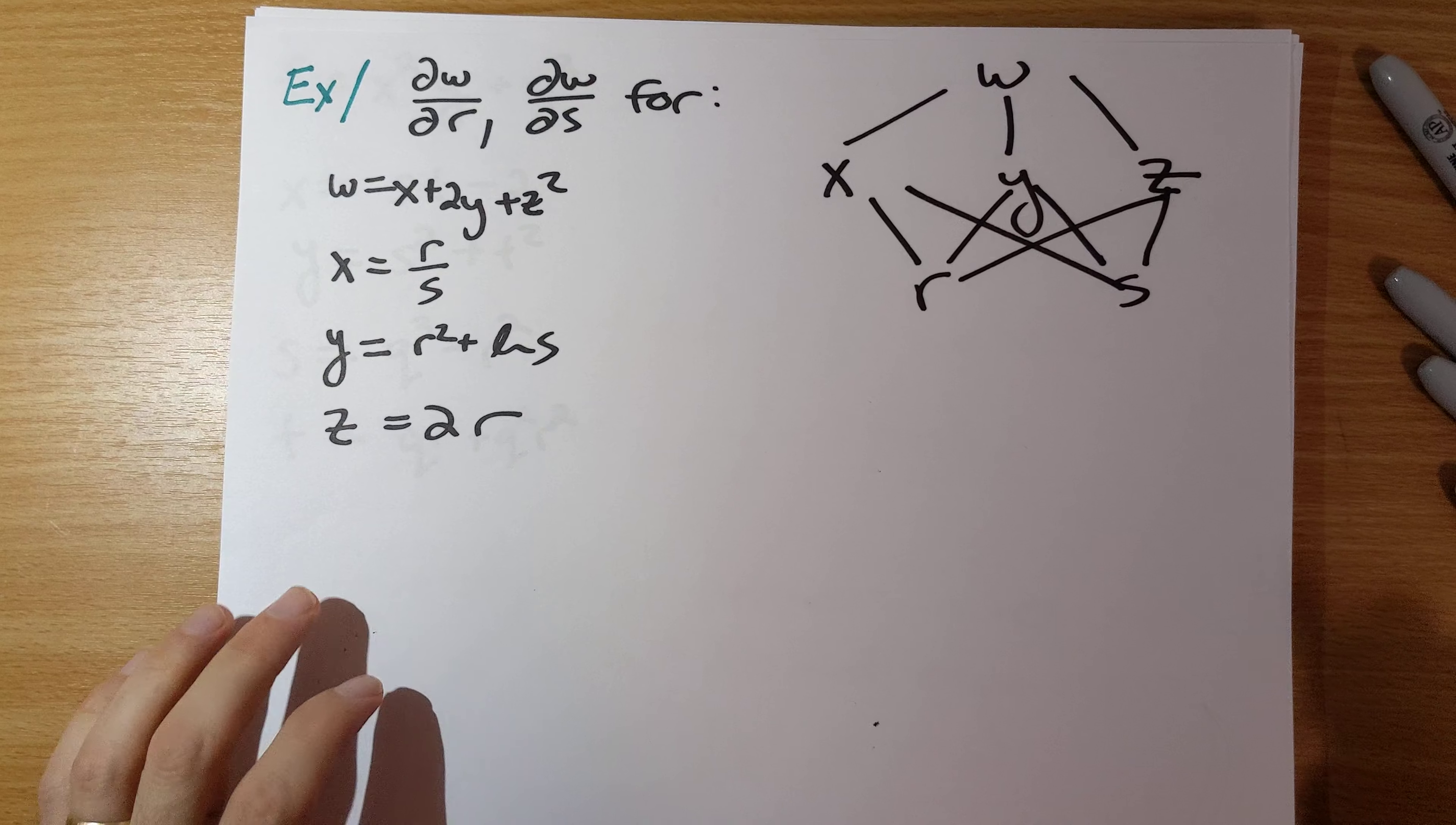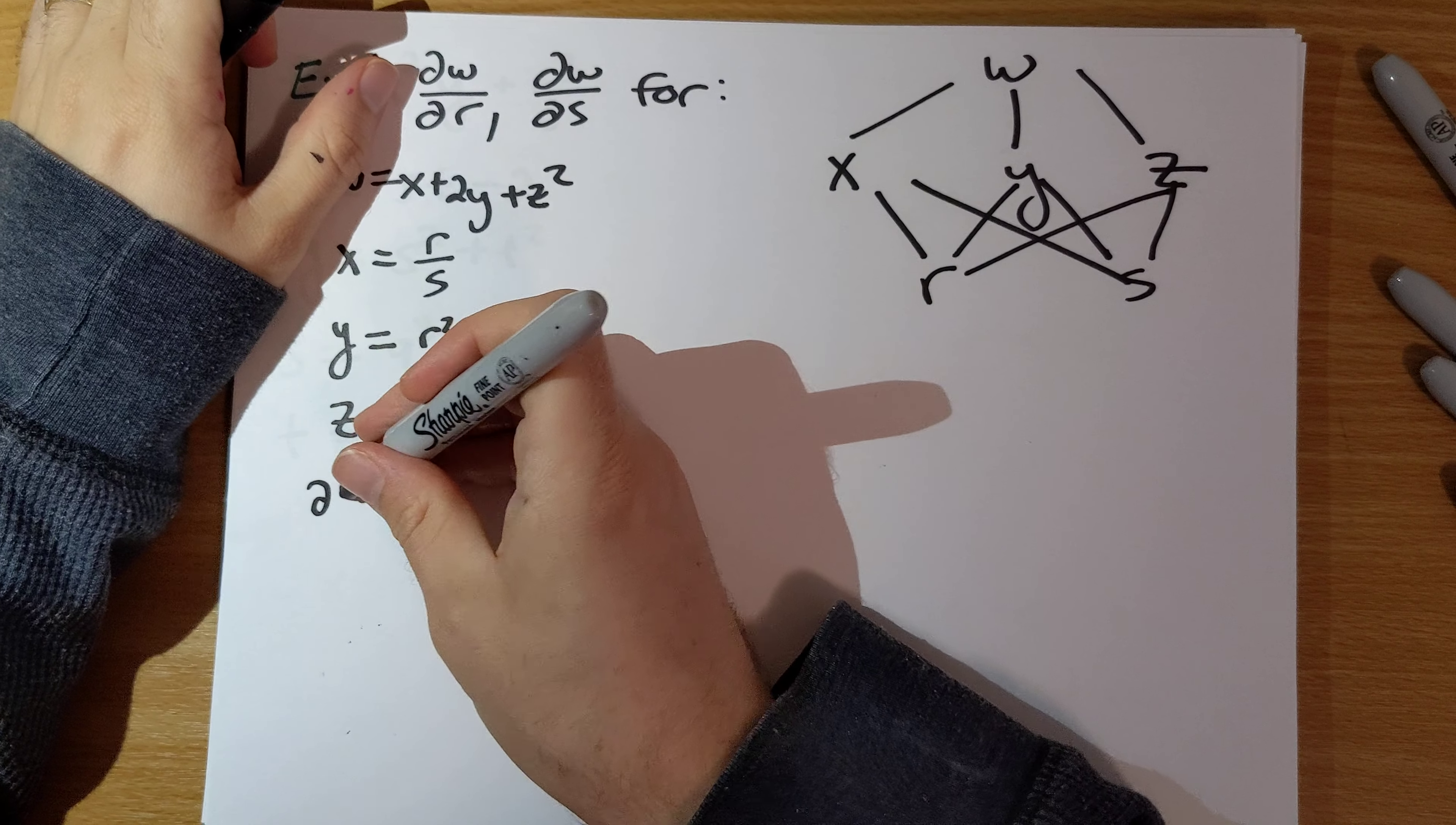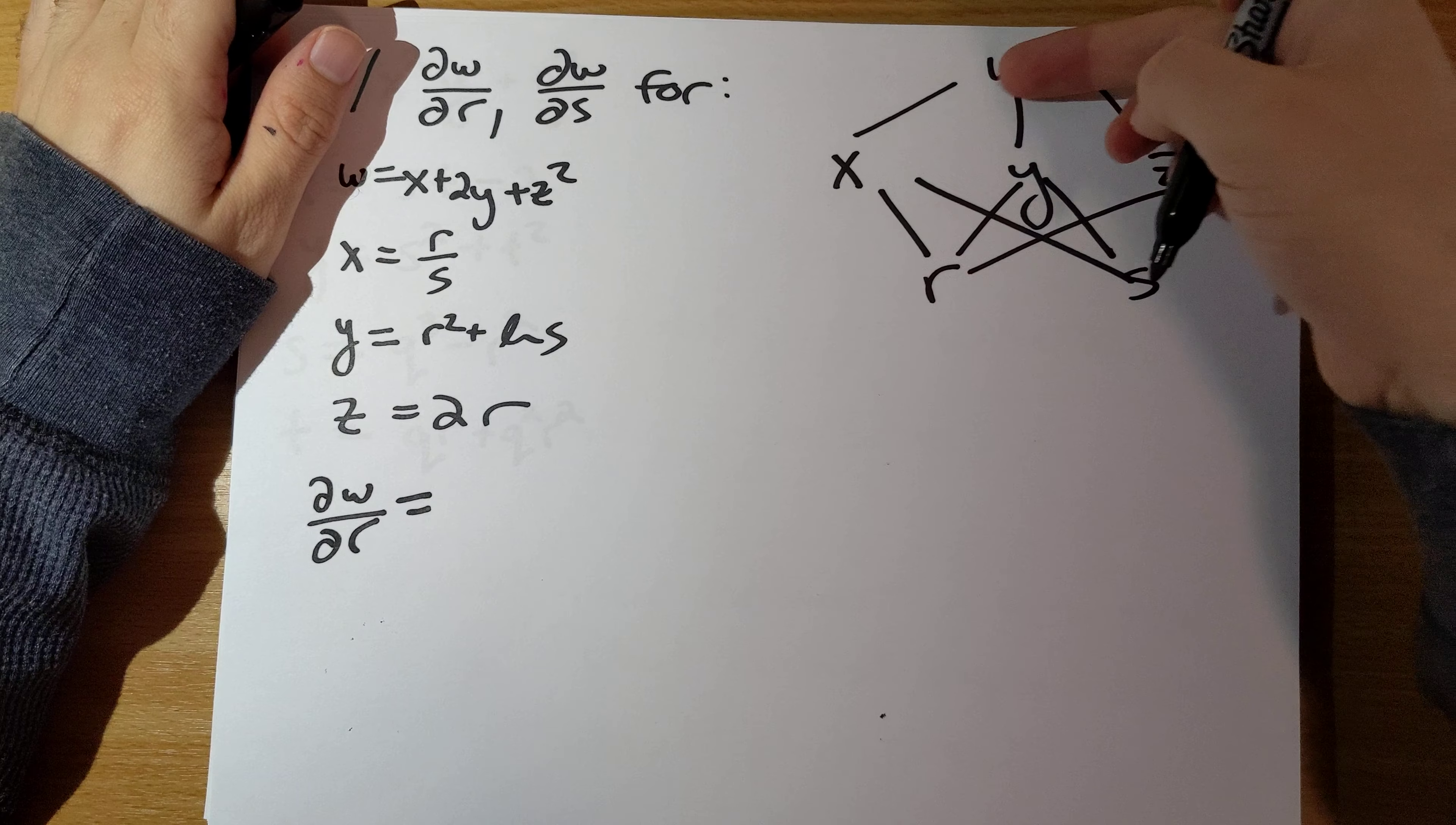Okay, so what happens here? We want the partial derivative of W with respect to R. So how do we get from W to R?